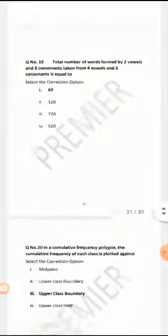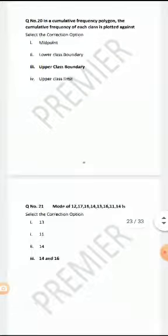Total number of words formed by 2 vowels and 3 consonants taken from 4 vowels and 5 consonants is equal to 60. In a cumulative frequency polygon, the cumulative frequency of each class is plotted against upper class boundary.